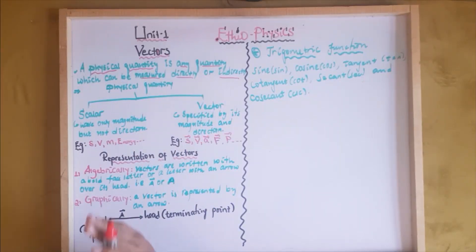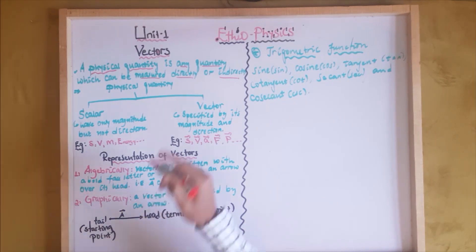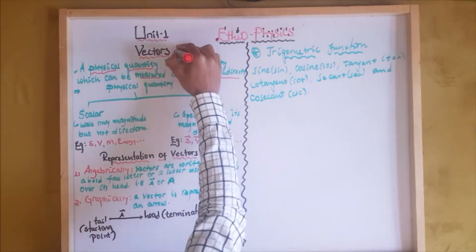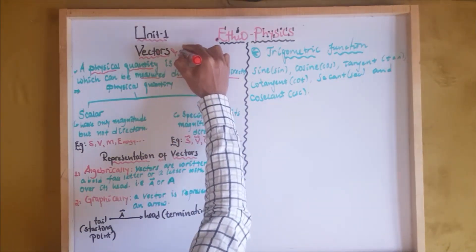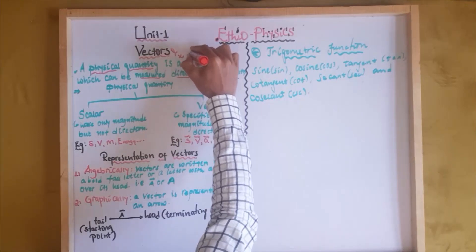For example, length, time, temperature — these are all examples of physical quantities that can be measured.